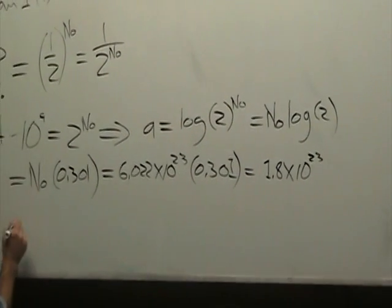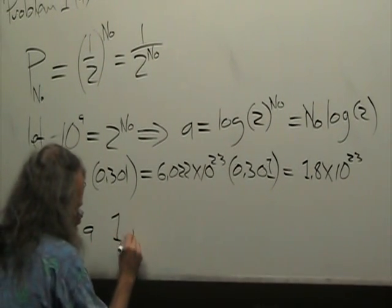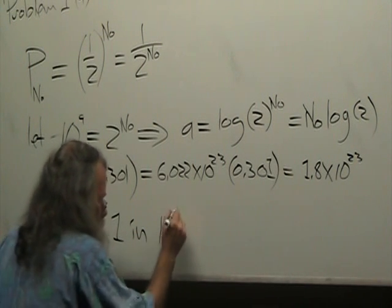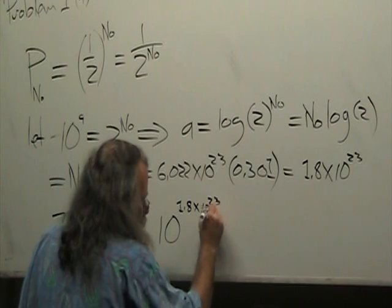And we can finally state that there exists a 1 in 10 to the 1.8 times 10 to the 23rd chance.